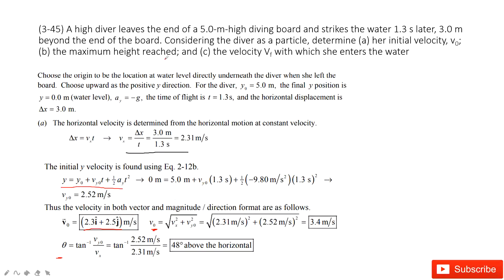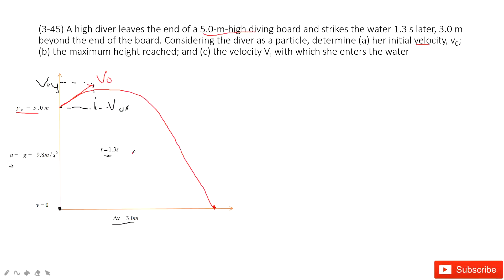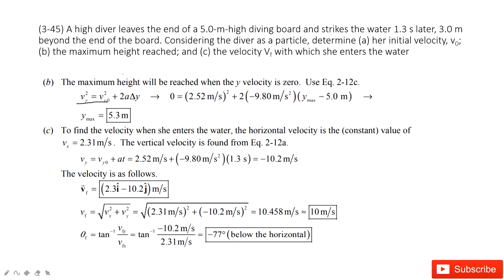The next part asks us to find the maximum height it reaches. When it reaches the peak, the velocity in the y component is zero. So from the initial position, with initial velocity v0y, and at the peak the y velocity is zero, and we also know acceleration — we can find the displacement in the y component using this equation. We know the velocity at the peak, the initial velocity, and the acceleration, so we can get the position at the peak.